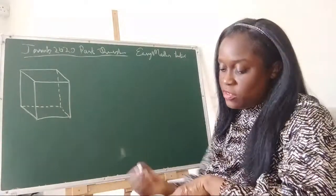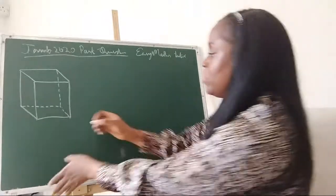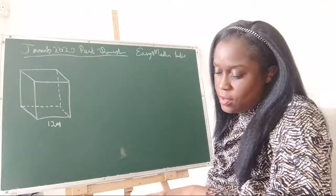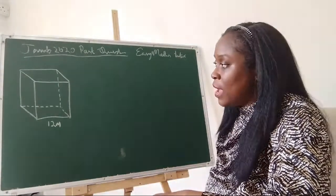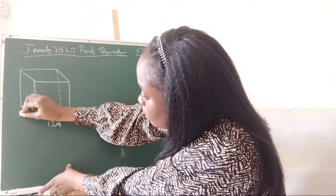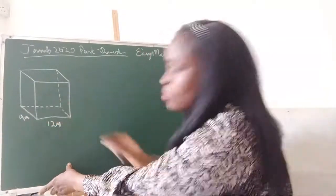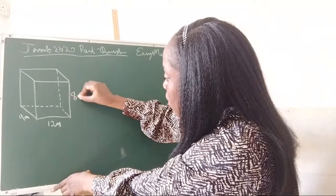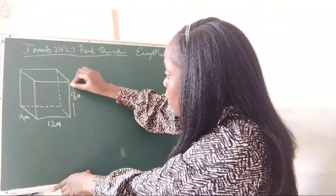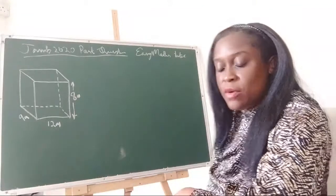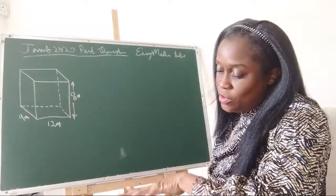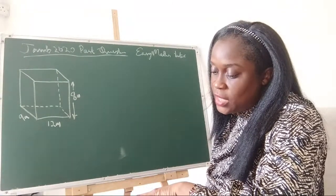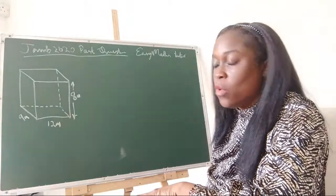So: 12 meters long, 9 meters wide, and 8 meters high. The question is: find the cosine of the angle which a diagonal of the room makes with the floor of the room.